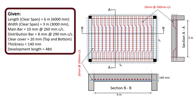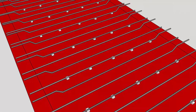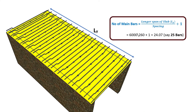First, let's do the calculation for main bars. The number of main bars is given by: longer span of slab divided by spacing, plus 1. The longer span is 6000 mm and the spacing is 260 mm. Substituting these values, the number of main bars is 24.07, say 25 bars.